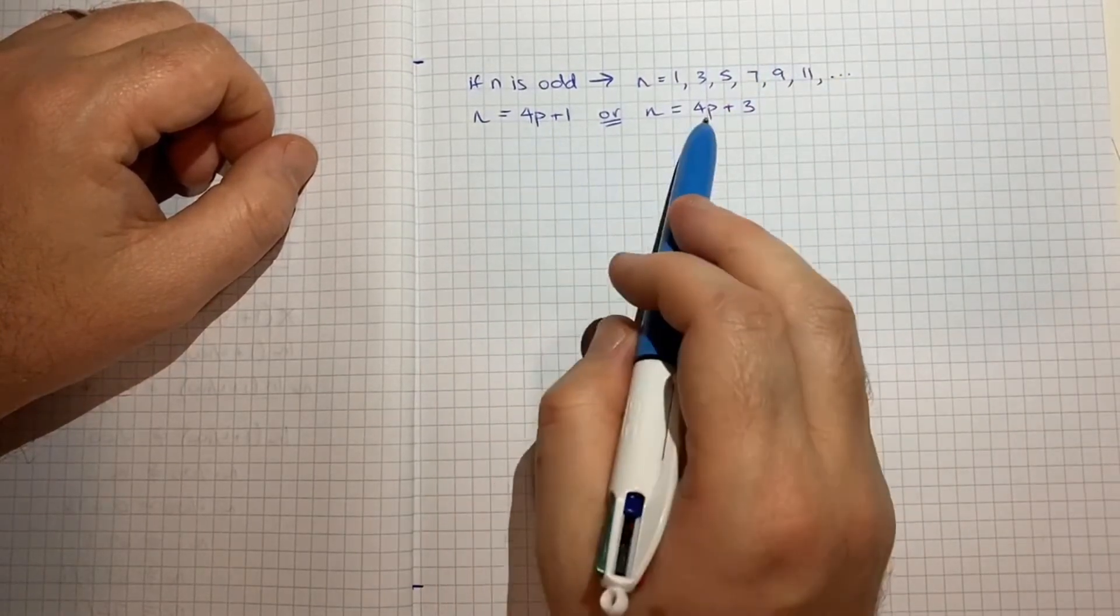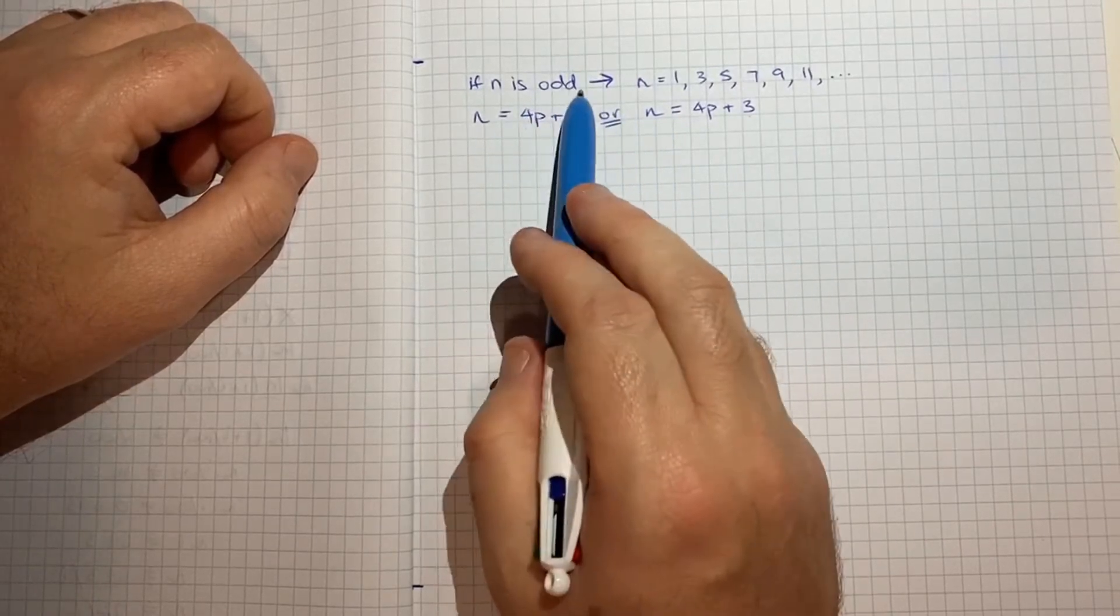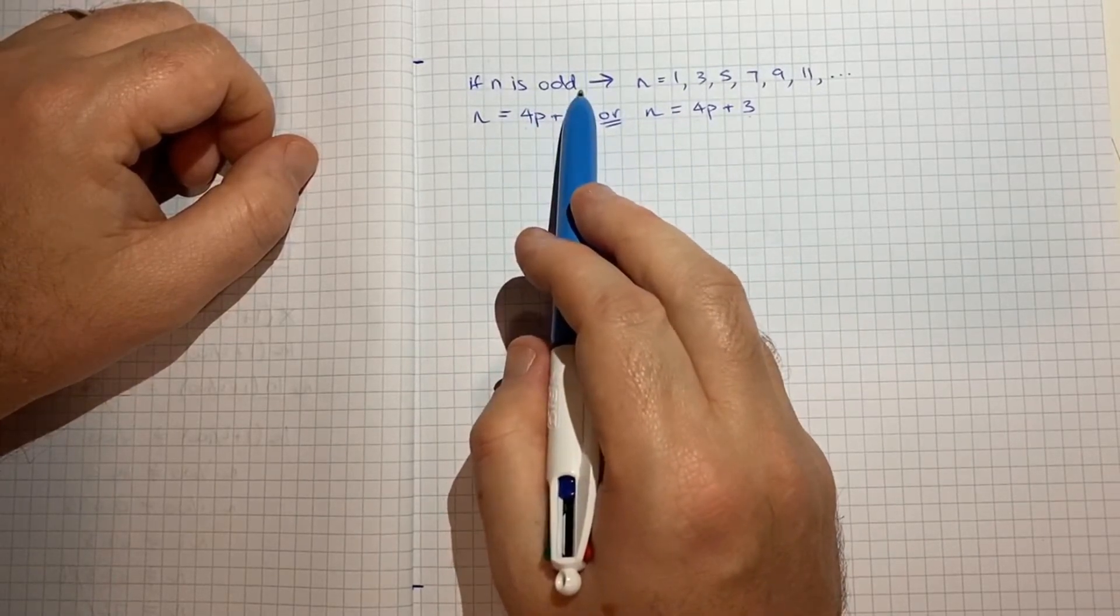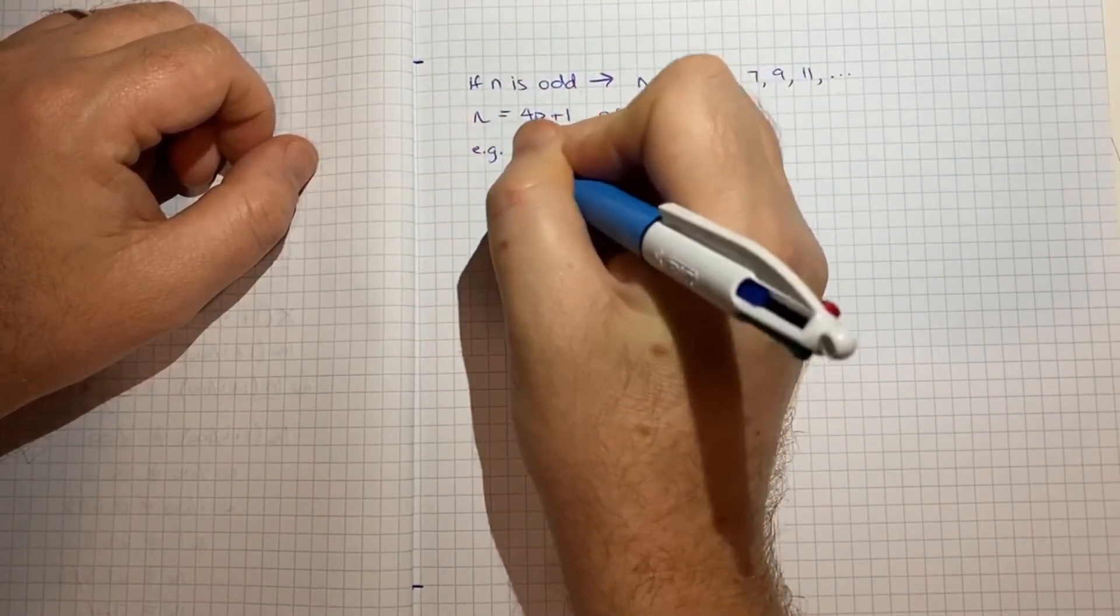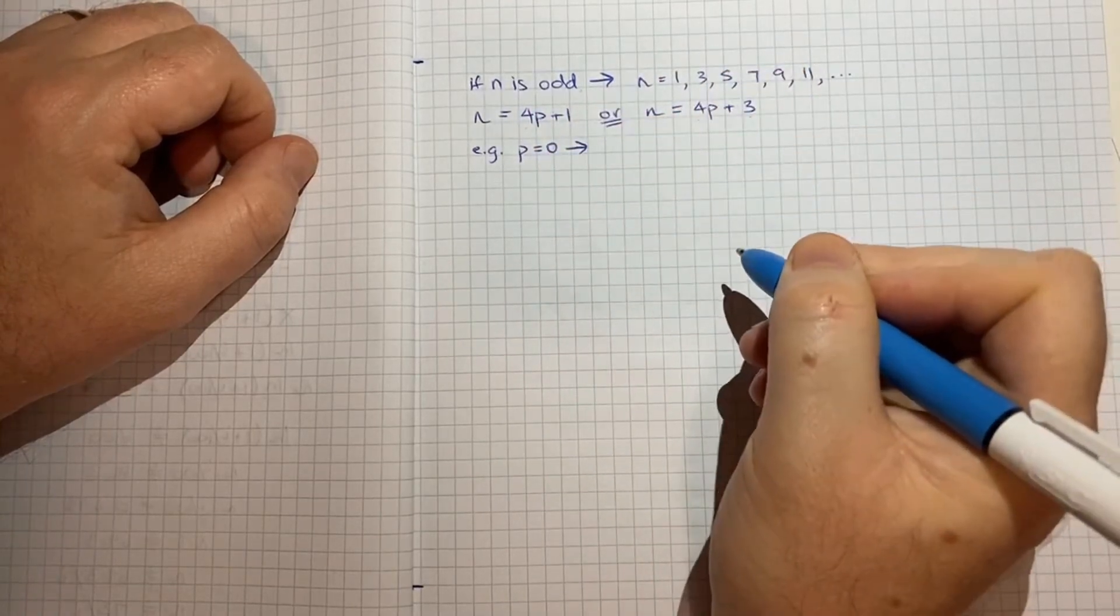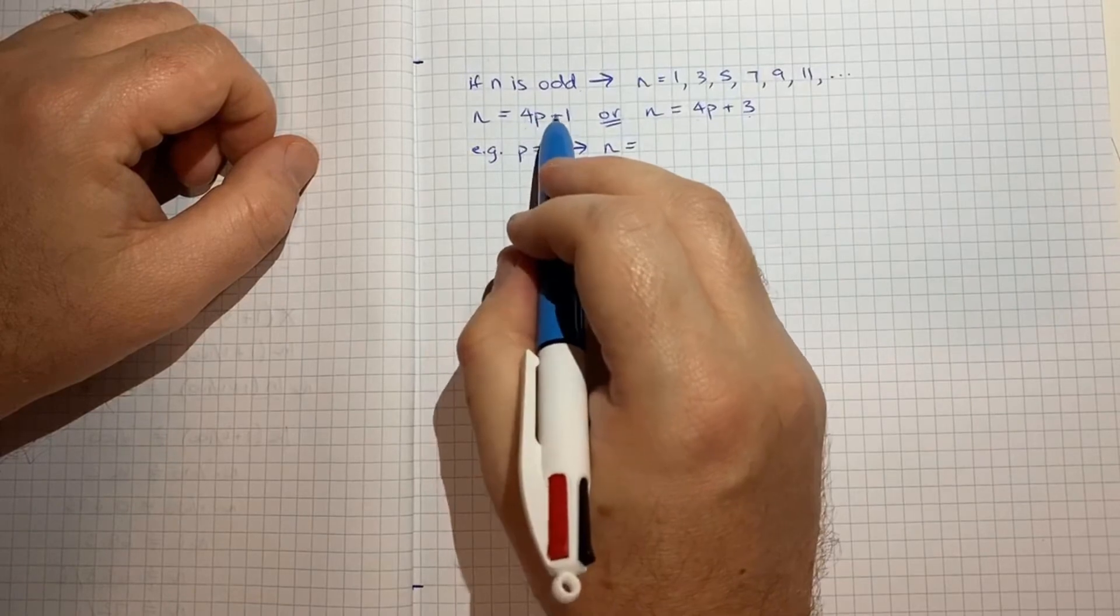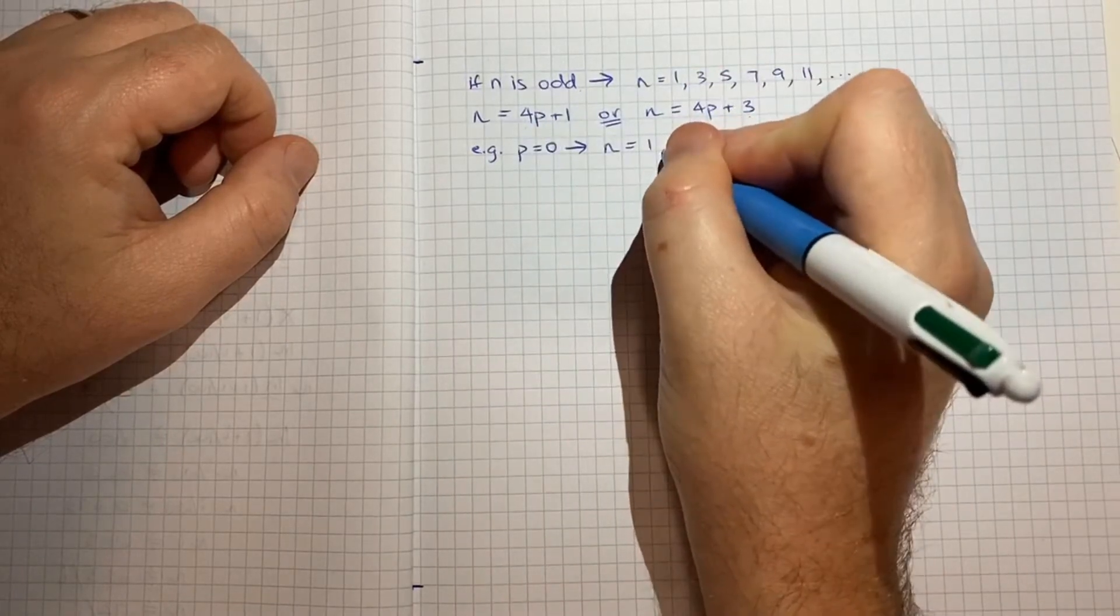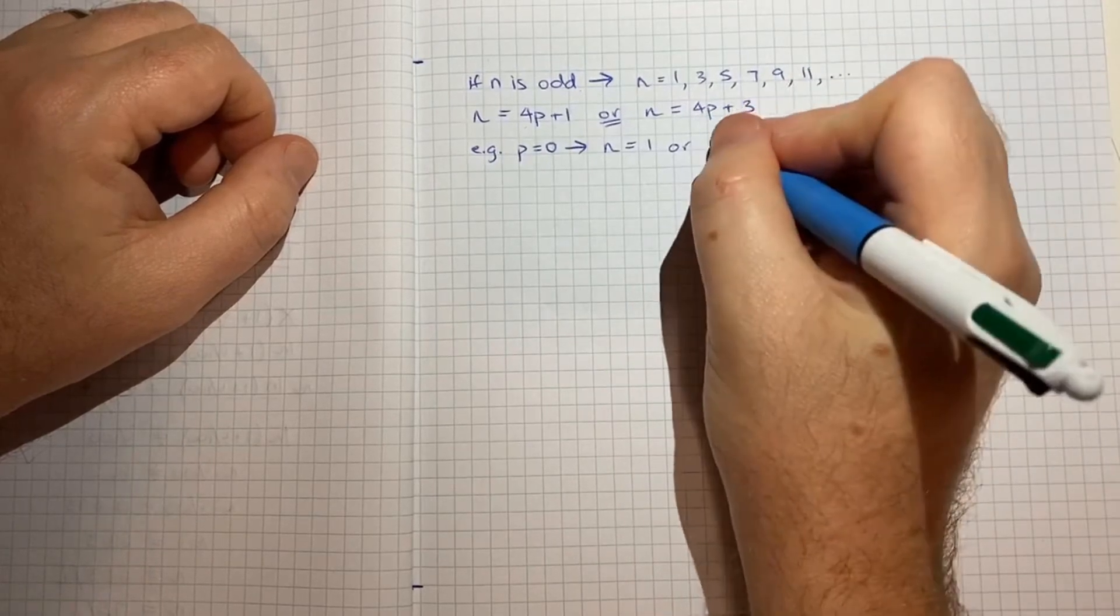Now if we define n like that we're actually in essence saying that n must be odd and it might help to look at some examples. So for example if we say p is equal to 0 then what does that give us? That would give us n is equal to 4 times 0 plus 1 which is 1 or n is equal to 4 times 0 plus 3 which is 3.